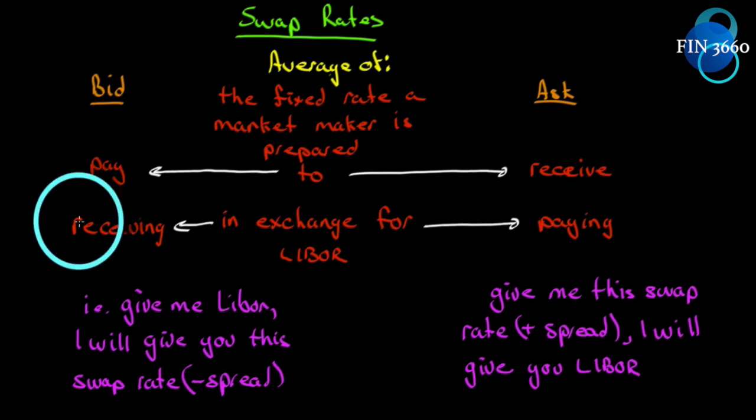If we read it on the bid, the bid is the fixed rate a market maker is prepared to pay in exchange for receiving LIBOR. The ask, on the other hand, is the fixed rate a market maker is prepared to receive in exchange for paying LIBOR. So what we're doing is we're getting fixed for floating on both sides.